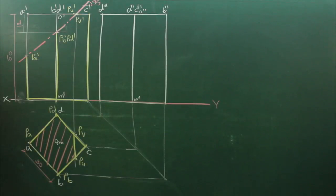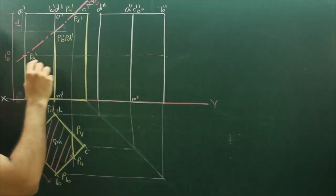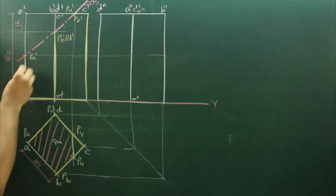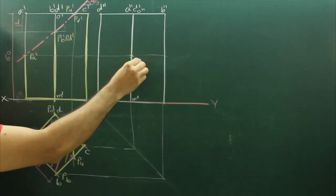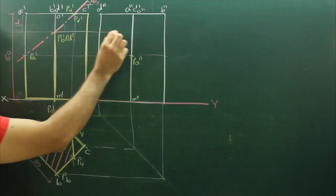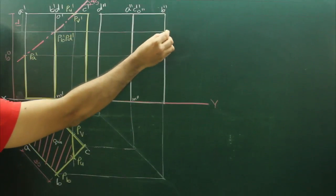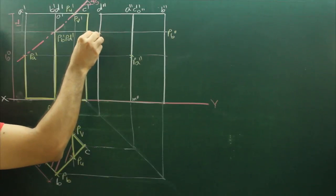Now for side view, we will project points from front view. PA dash, it is on A dash, so on A double dash, wherever PA dash would intersect the line from PA dash, that would be PA double dash. Same way from B dash to D dash, wherever it will intersect with B double dash, that would be PB double dash, and this would be PD double dash.